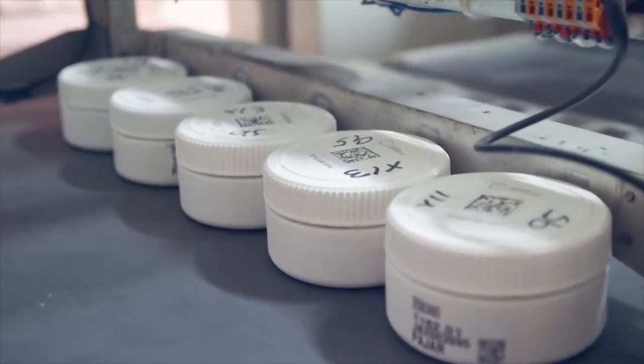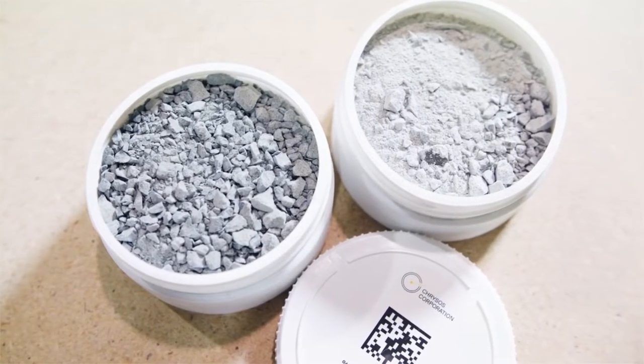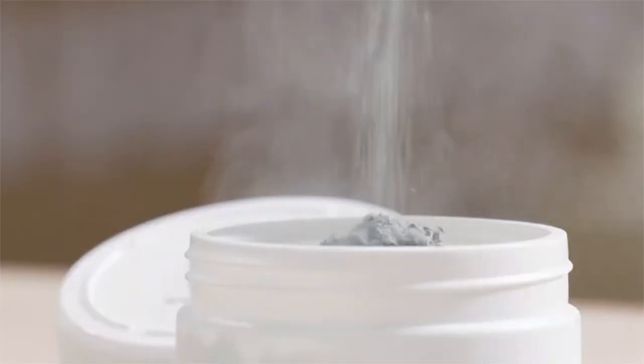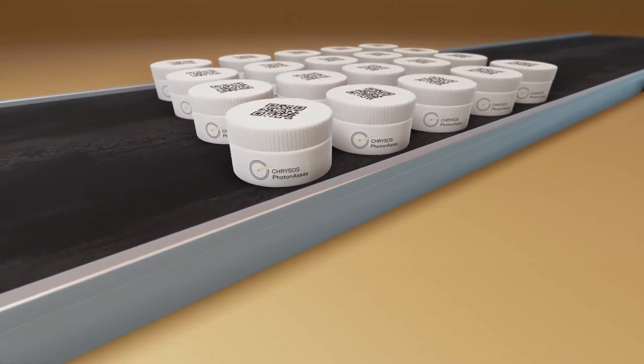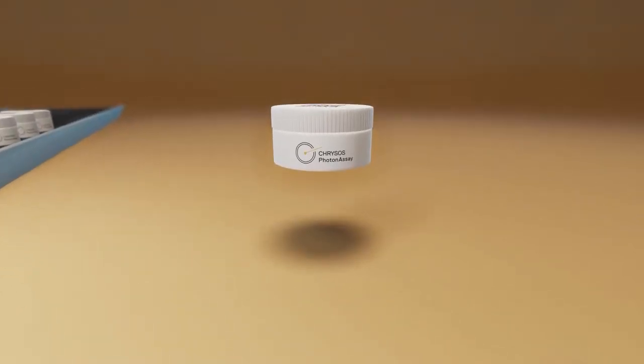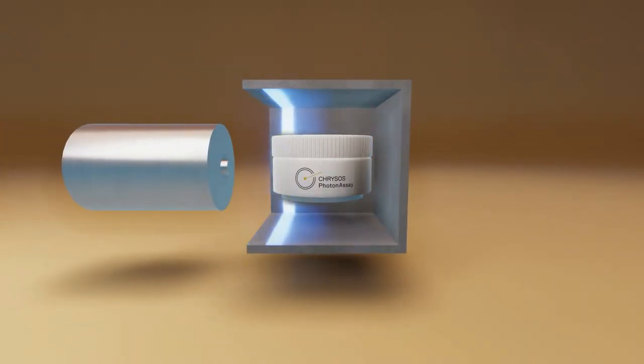This methodology enables Photon Assay to analyse samples with high precision within an applicable range of 0.01 grams per tonne through to 35,000 grams per tonne. The sample jar and reference disc are then positioned for analyses inside purpose-built shielding prior to activation.